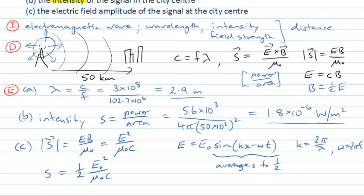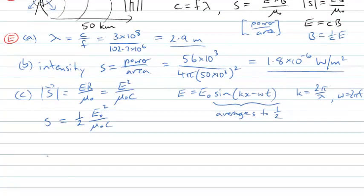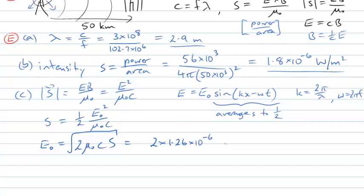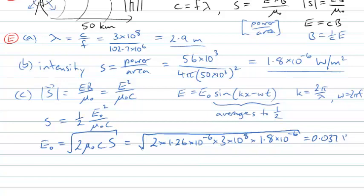Rearranging that expression, the electric field amplitude E₀ = √(2μ₀c × S). Substituting in μ₀ = 1.26×10⁻⁶ (SI units), c = 3×10⁸ m/s, and our intensity of 1.8×10⁻⁶ W/m², and taking the square root, we find E₀ = 0.037 V/m, or more neatly, 37 millivolts per metre as the electric field amplitude of this radio wave at the city centre.